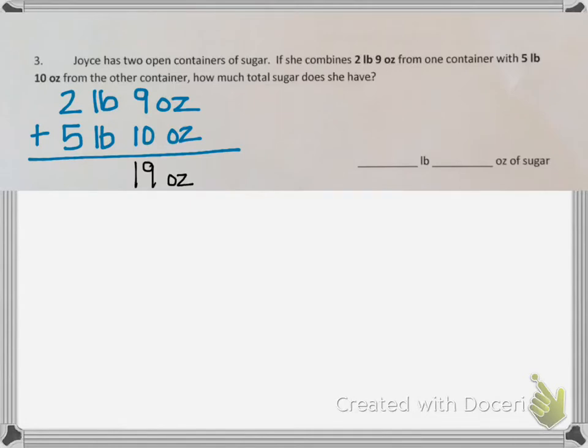9 ounces plus 10 ounces is 19 ounces, and 5 pounds plus 2 pounds is 7 pounds.